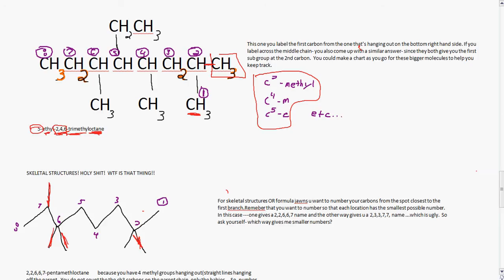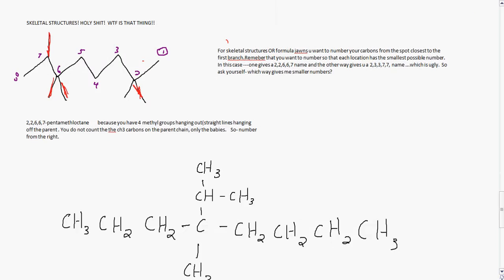So let's look at a skeletal structure. Because you'll see a lot of these that you have to name as well. And for skeletal structures or formulas, again, you want to number your carbons from the spot closest to the first branch. So remember that you want to number each location and have the smallest possible number. In this case, if you number with the 1 on the right, it will give you a 2, 2, 6, 6, 7. And the other way gives you a 2, 3, 3, 7, 7 name, which is ugly. So ask yourself, which way gives me the smallest numbers?